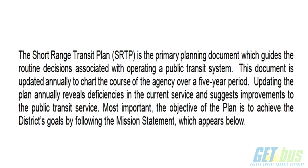The short range transit plan — you may recall when we reviewed it last year — is a primary planning document which guides the routine decisions associated with operating the system. The document covers a five-year span. It's updated annually, and most importantly, the objective of the plan is to achieve the district's goals by following the mission statement.